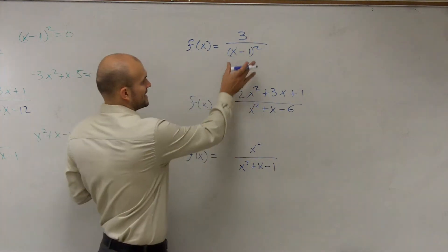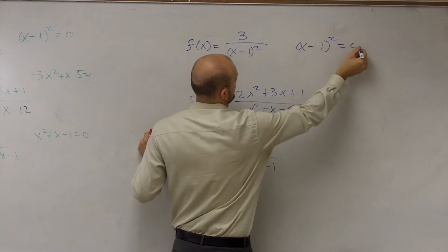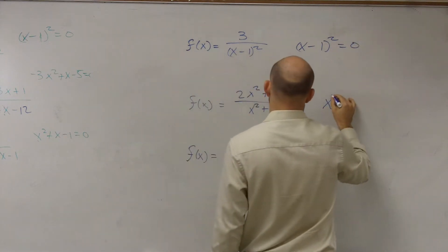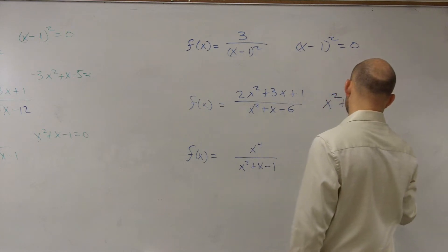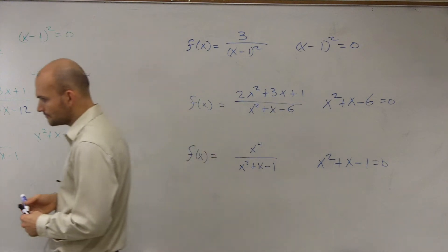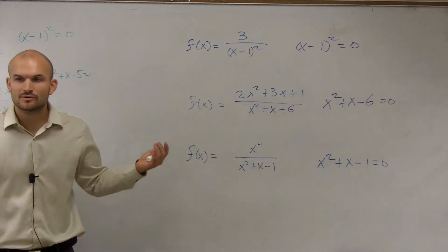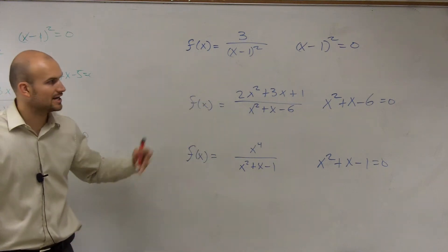For vertical, all we do is we take our denominator and we set it equal to 0. You set it equal to 0 and solve, and that's it. So to find the vertical asymptote, you just take what's on the bottom and solve.